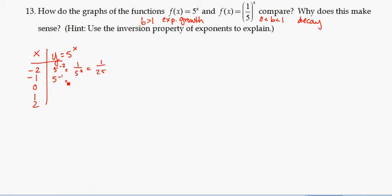When x is negative 1, we get 1 over 5 to the first. When x is 0, we get 1. When x is 1, 5 to the 1 is 5, and 5 squared is 25.